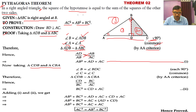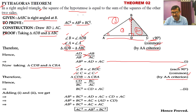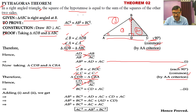Similarly, we take triangle CDB and triangle ABC. Angle B = angle D (angle BDC) = 90°, and angle C is common. So triangle CDB is similar to triangle CBA by AAA criterion. Their corresponding sides are in the same ratio: CD/BC = BC/AC. Cross multiplying: BC² = CD × AC. This is equation number two.